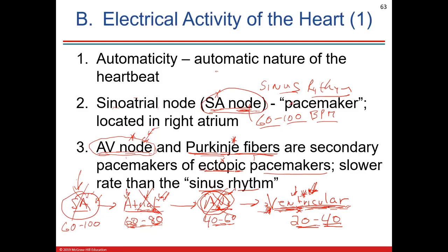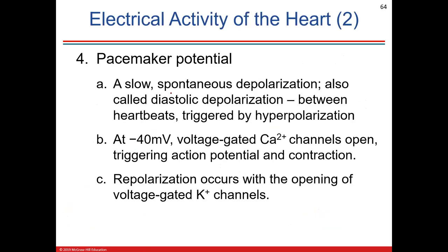Defibrillation resets the whole electrical system and hopefully wakes up the SA node. If the SA node is not working, an artificial pacemaker is installed in the hypodermis or subcutaneous tissue of the chest, starting action potentials from a little transistor to get ventricular output. The hierarchy is: if SA node fails, the atria pick up; if atria fail, AV node picks up; if all three fail, ventricles have to pick up. You don't want that — that's a very sick heart.